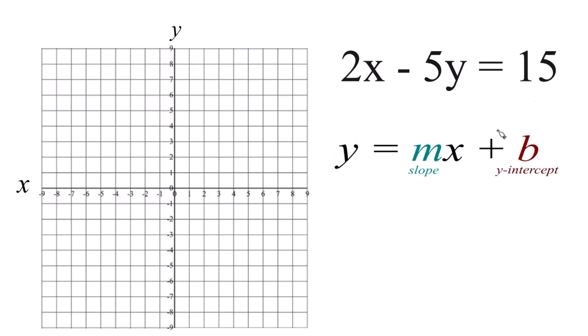You could use a table of values and get the same graph. This is just a little easier. For this to work, I need to get this equation, 2x minus 5y equals 15, into slope-intercept form. Let's do that.